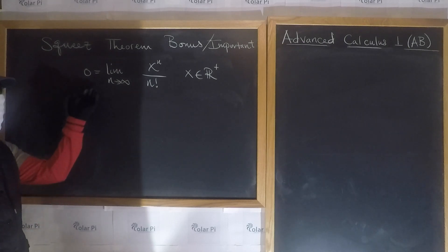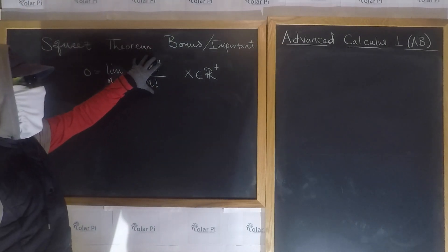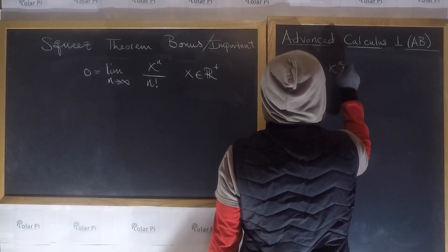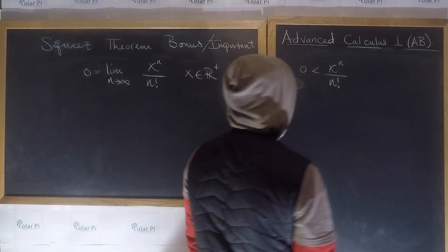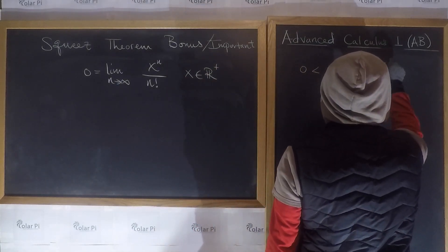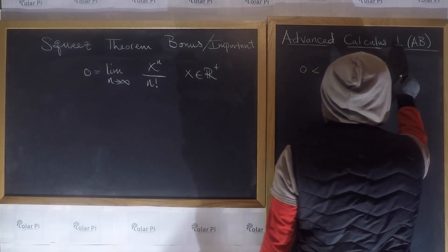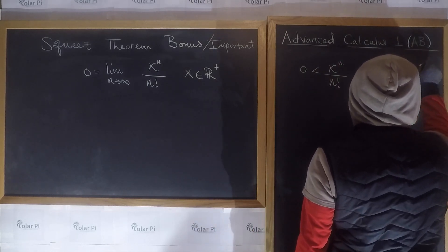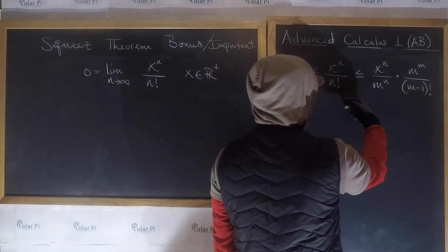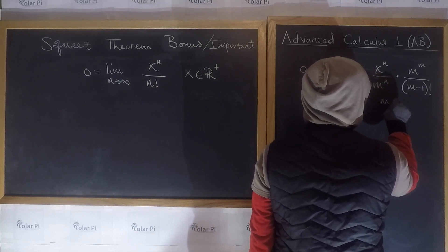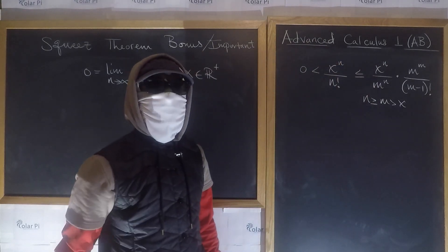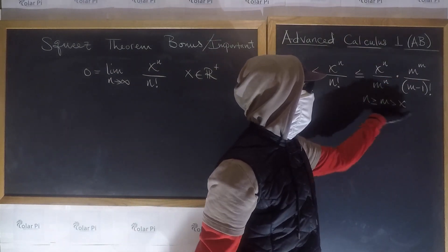So how do we show that this is true? Since we're using the squeeze theorem, we need to figure out how to squeeze this expression. On the left, we squeeze by zero — that is, zero is less than x to the n over n factorial for any x and any n. And on the right side, we'll show that x to the n over n factorial is less than or equal to x to the n over m to the n, times m to the m over m minus 1 factorial, when m is greater than x and n is greater than or equal to m.